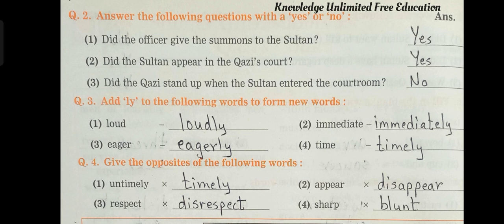Question number 4: Give the opposites of the following words. Number 1 — Untimely: Timely. Number 2 — Appear: Disappear. Number 3 — Respect: Disrespect. Number 4 — Sharp: Blunt.